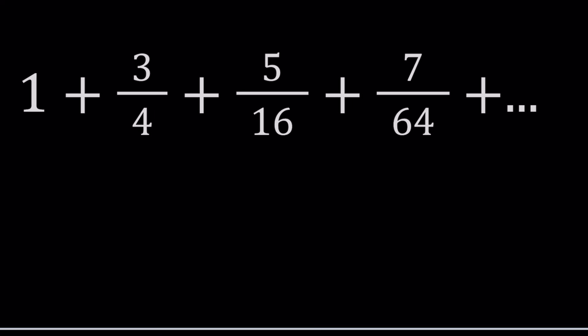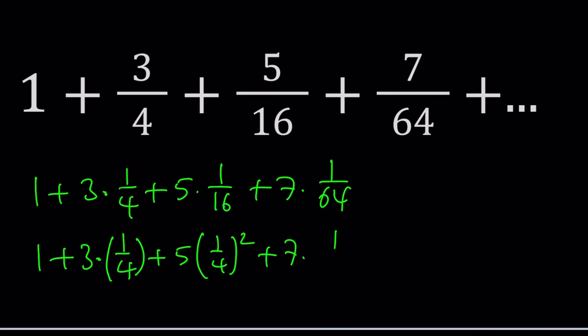First of all, I want you to notice that this can be written as 1 plus 3 times 1 over 4, plus 5 times 1 over 16, plus 7 times 1 over 64. And the next step, I can basically write this as 1 plus 3 times 1 over 4 to the first power, and then 5 times 1 over 4 to the second power, and then 7 times 1 over 4 to the third power.